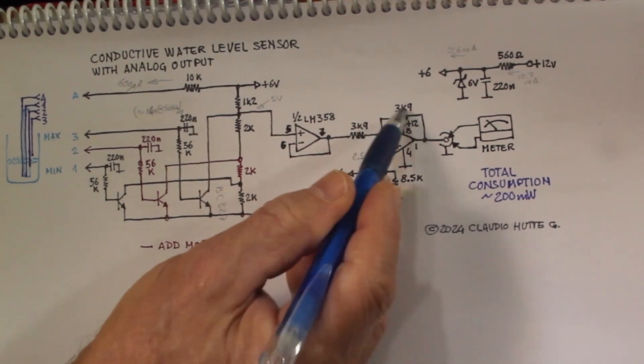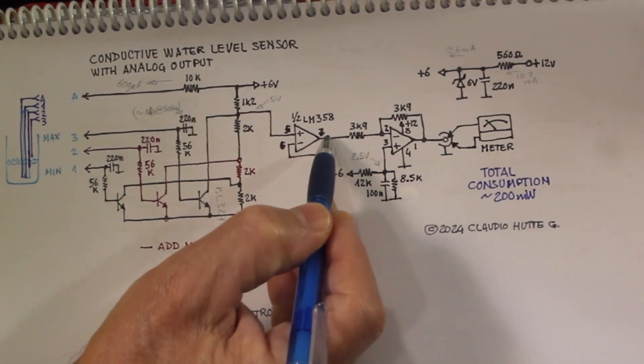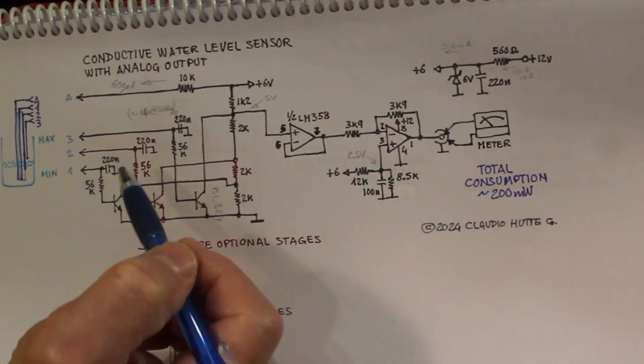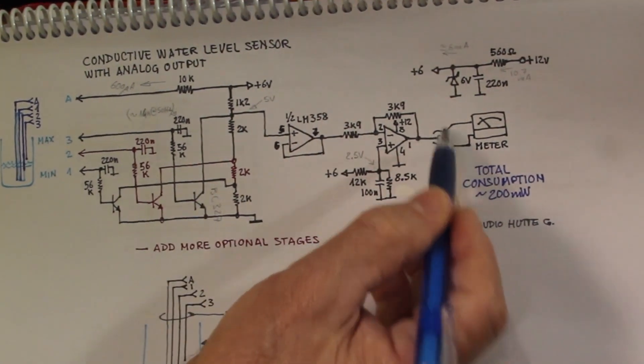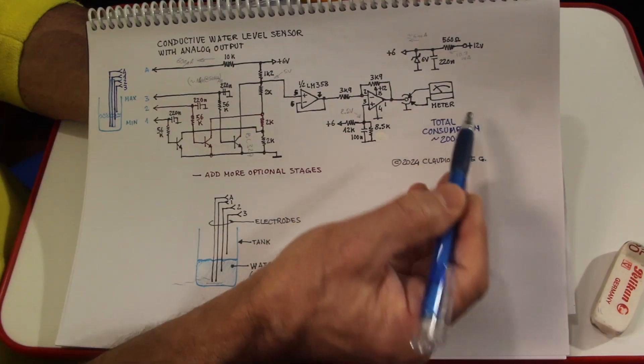In fact, here we have 2 resistors, the same value of this resistor, so 5V here, 0V here, 2.5V here, and here is the output that can be connected directly to a meter or a voltmeter, or maybe to an analog input of a device, let's say an Arduino.